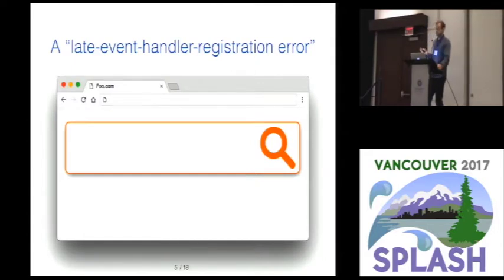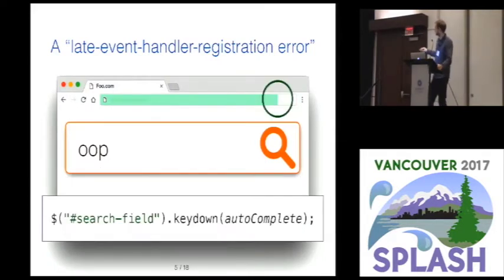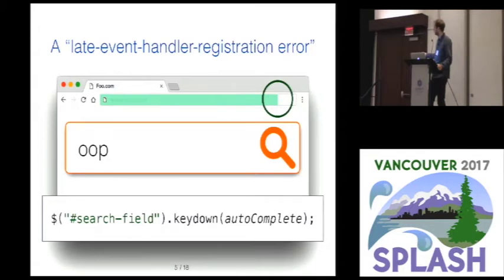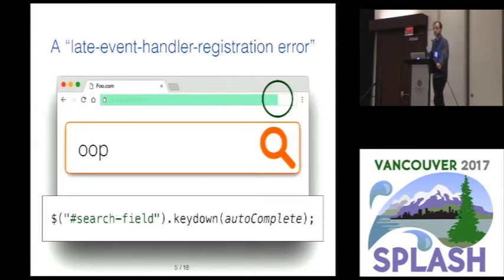The next class of errors is called late event handler registration errors. You could imagine that this search field has an autocompletion feature, so the website provides suggestions when the user starts typing. Such a feature would usually be implemented by registering an autocomplete function as an event handler for the key down event on the given search field. The problem is that by the time this line executes, the form field could already have been visible on screen for a while, meaning the user could already have started typing before this event handler was registered. In this case the user's input is simply ignored by the web application and the feature doesn't work.